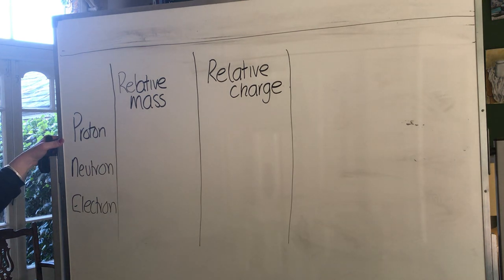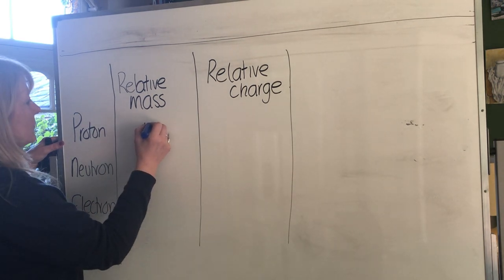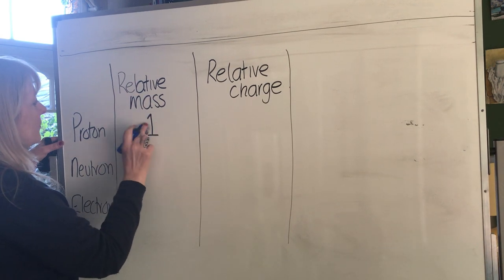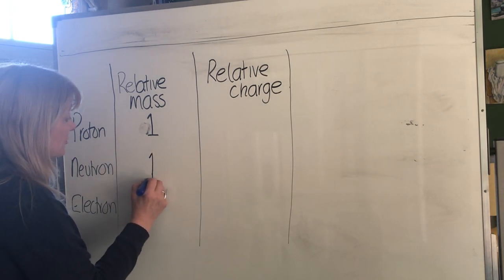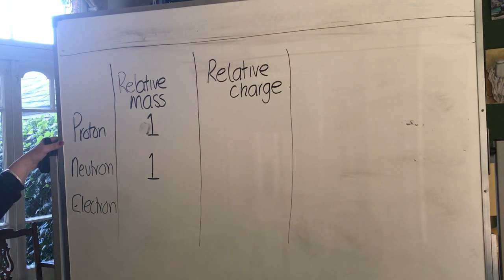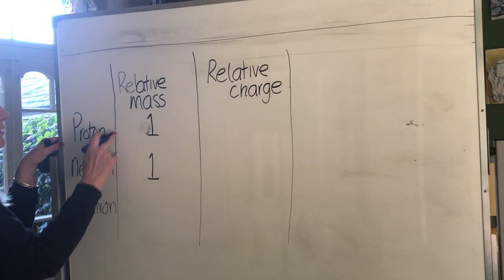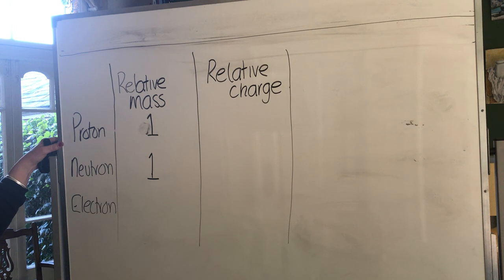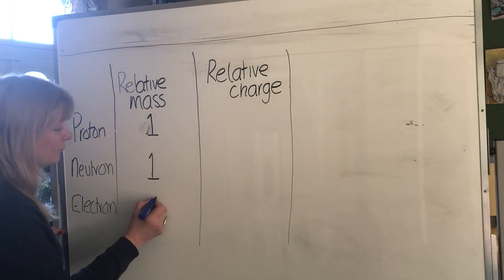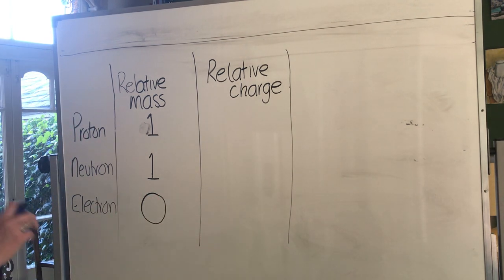The word 'relative' tells us it's not the actual mass or charge, it's what that mass or charge is in relation to the other particles. The relative mass of a proton is one unit. The mass of a neutron is exactly the same - about 6×10⁻²⁷ kilograms, so very, very small. An electron relative to those is much, much smaller - about 10⁻³¹ kilograms - so we call the relative mass of an electron zero because it's so small compared to the other two.